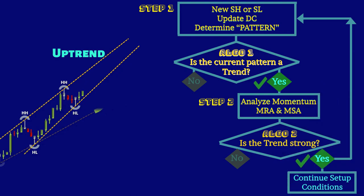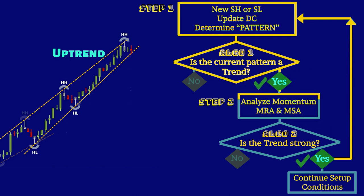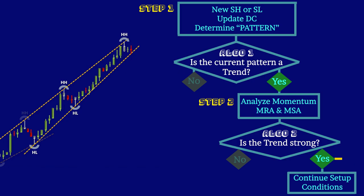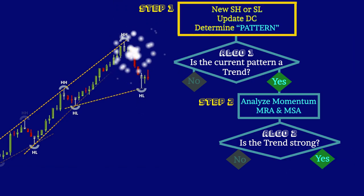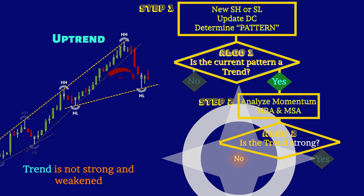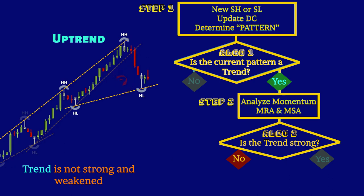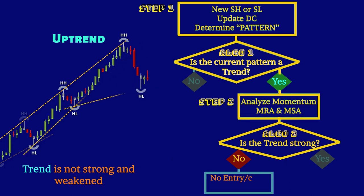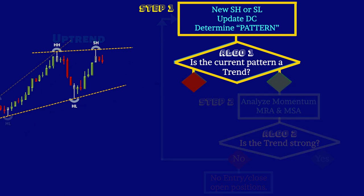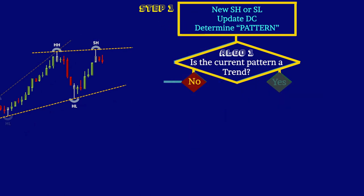This cycle will be repeated while you are checking other entry setup algorithmic conditions. You repeat steps and ALGOs one and two until the momentum shows signs of trend weakness. Then you should not look to enter any new positions and be prepared to close all open positions. Look at every new turning point to see if the trend gets strong again, or transitions to sideways.